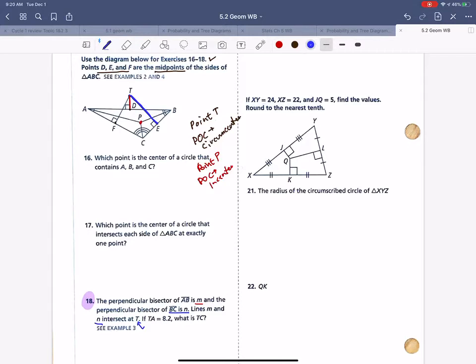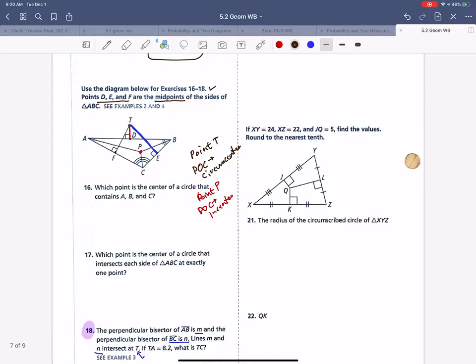The question says the perpendicular bisector of AB is M, and the perpendicular bisector of BC is N. They intersect at T. So what do we know? Well, we know the circumcenter would create a circle on the outside. So if I made a circle from T, the center is T, it would touch C, B, and A. This is the center of this circle. So that means this radius would be equal to this radius, would be equal to this radius.